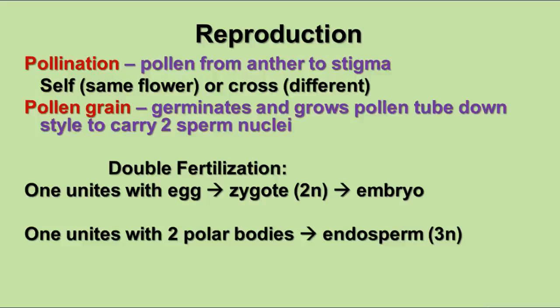In flowering plants — both monocots and dicots — we have something called double fertilization. One sperm nucleus unites with the egg cell to become the zygote, which grows into the plant embryo that will be part of the seed. The other sperm nucleus unites with two polar bodies — extra nuclei produced during egg cell formation — producing something called endosperm. Endosperm is a triploid substance used to nourish the growing seedling until it can undergo photosynthesis to produce its own food. This produces the food supply for the seed.